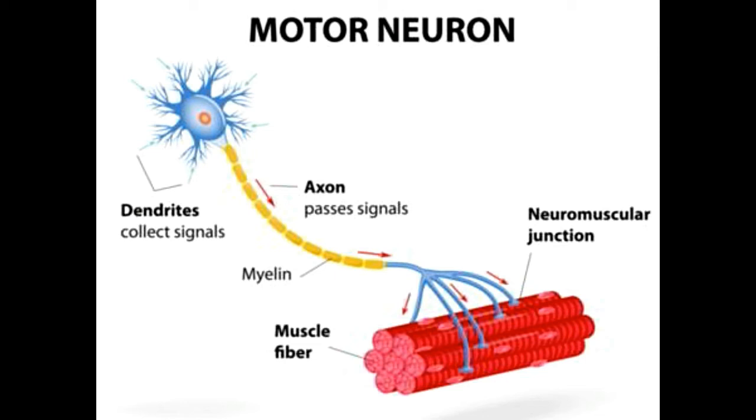Visceral neurons are specifically designed to stimulate organ-related muscles. The special visceral neurons control the branchiomeric muscles. Branchiomeric muscles are basically muscles of the face and neck. The general visceral neurons stimulate cardiac muscles, smooth visceral muscles, and also certain gland cells.